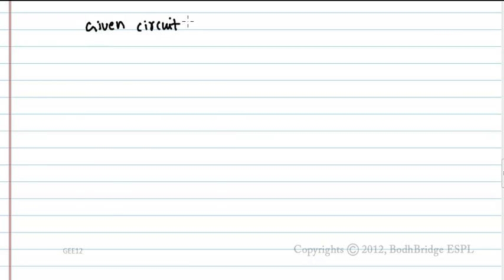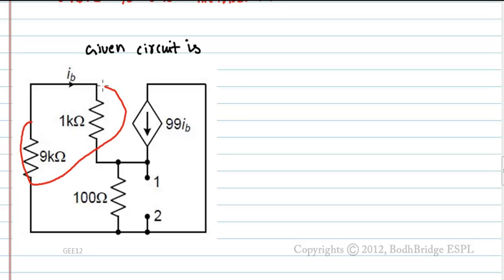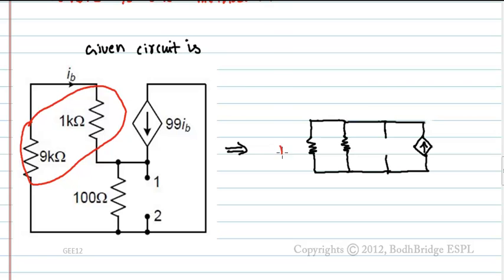Given circuit is: these two resistors are in series, so the circuit becomes 9k plus 1k, which is 10 kilo ohm. Current flowing through this branch is IB. This is 100 ohm, node 1, node 2, 99 IB.